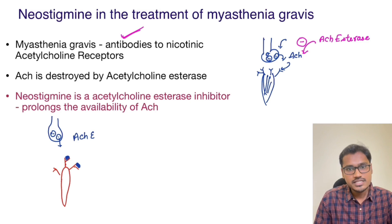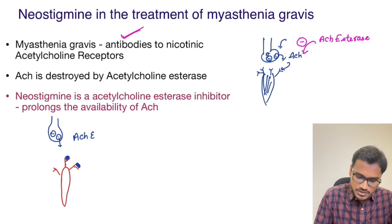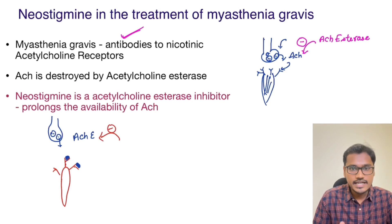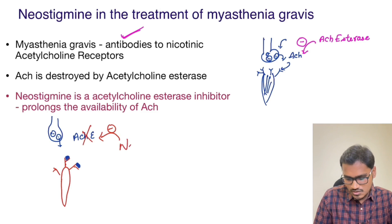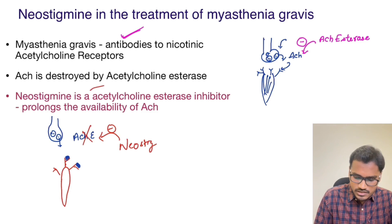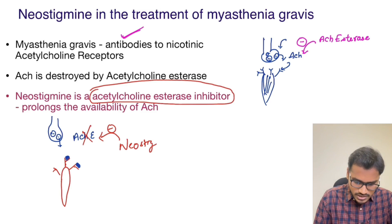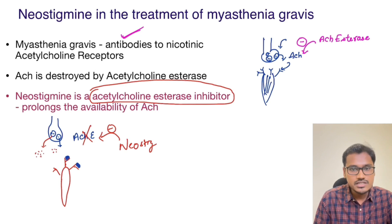So what neostigmine is specifically doing in this patient is it is going to attack and destroy this acetylcholine esterase. So neostigmine is nothing but an acetylcholine esterase inhibitor. This acetylcholine esterase is inhibited, so whatever acetylcholine is available will be available for a longer duration.